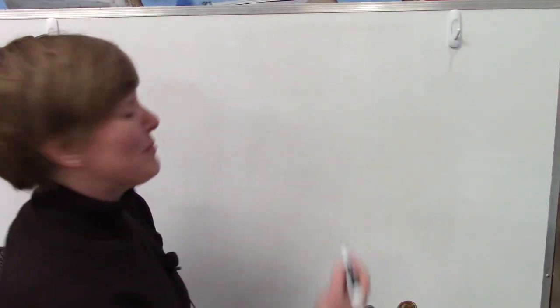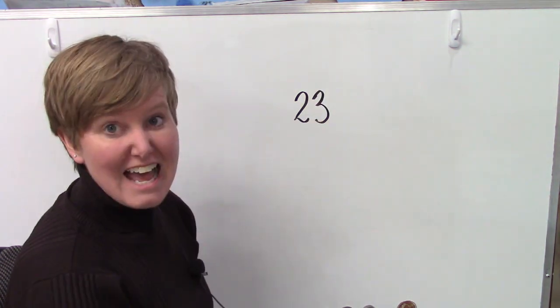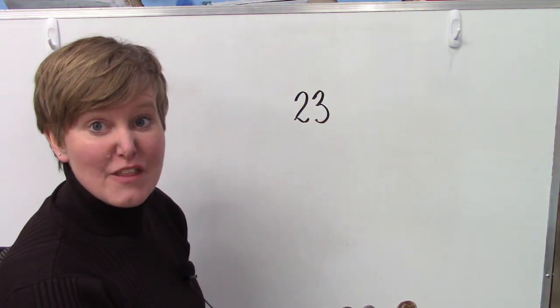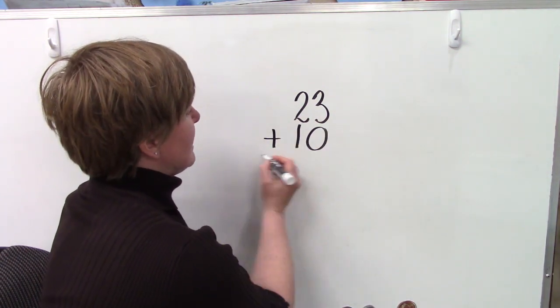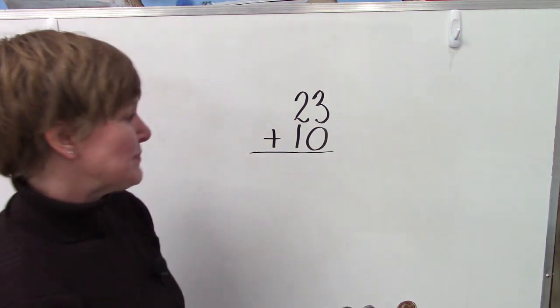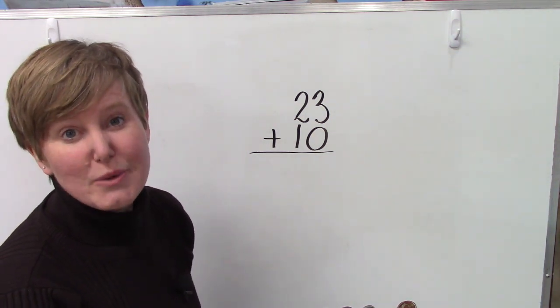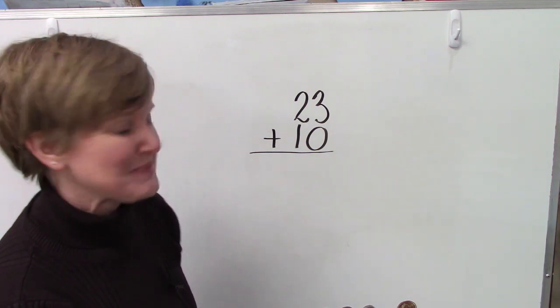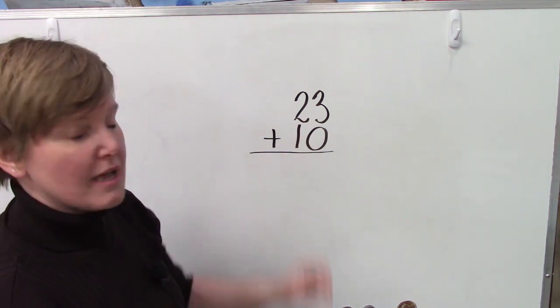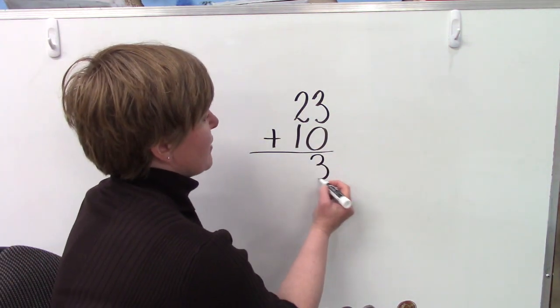Class, we're going to start with the number 23. 23. And then we're going to add 10 to that number. 23 plus 10. When we add, the first thing that we do is we add our numbers that are in the ones place. So that is the number 3 and the number 0. 3 plus 0 is 3.